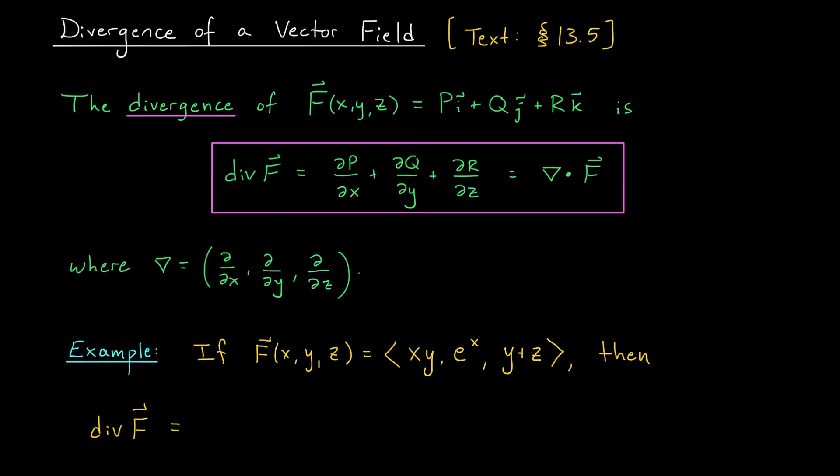Hi everyone, and welcome back. In our last lesson, we defined the curl of a vector field, which was a derivative-like object that told us about some of the physical properties the vector field might exhibit — in particular, it told us about rotations. Today we're going to consider another type of derivative we can get from our vector field called its divergence.